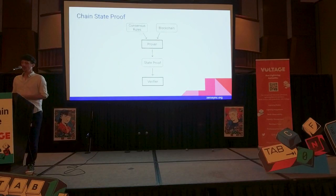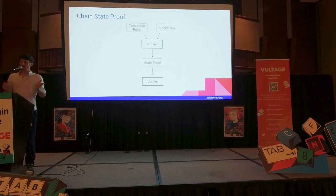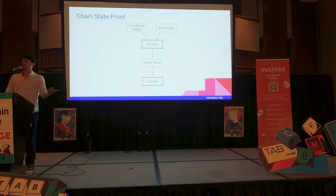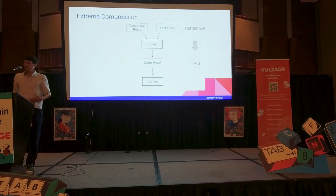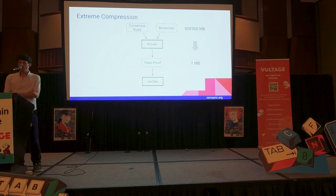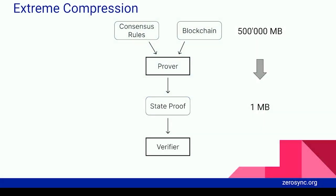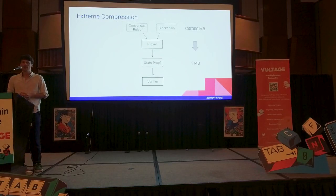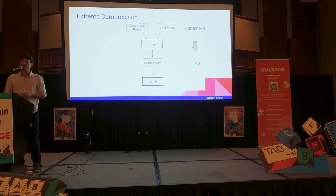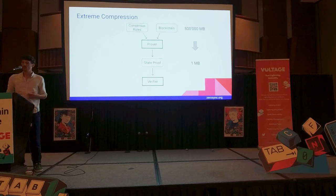The program is our consensus rules, and the input is the blockchain. We put it into a prover, and we derive the state proof from that, which tells us what is the current state — who owns what, what is the current state of the UTXO set. It allows us to compress the blockchain by a factor of about 500,000 or so. We take the 500 GB of data and compress it into a proof that is less than a megabyte — a 500,000x improvement. If the blockchain would grow to a terabyte, it would still be a megabyte to prove it. That is quite impressive and game-changing for Bitcoin.